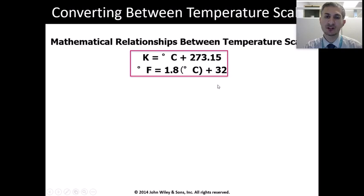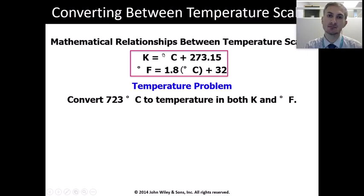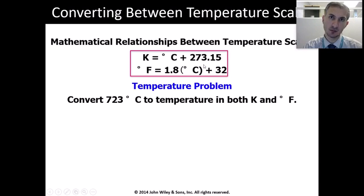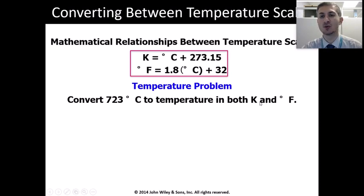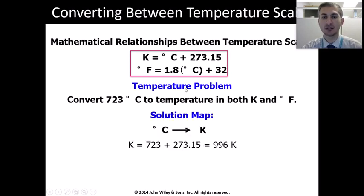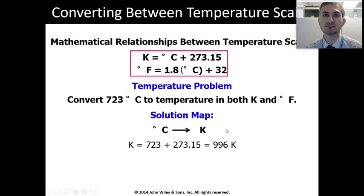Let's work with some examples. We use degrees Celsius plus 273.15 or 273 — it depends on the problem and textbook. The question says: convert 723 degrees Celsius to both temperature scales. For degrees Celsius to Kelvin, plug into the equation and you get 996 K. You don't report the 0.15 because 723 plus 273.15 gives 996 K.